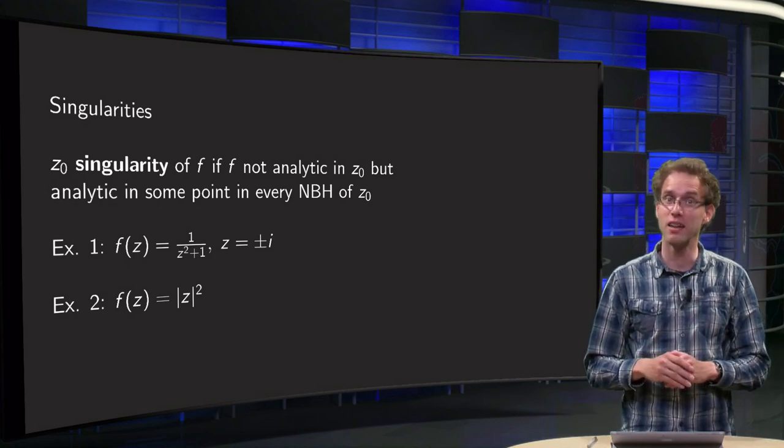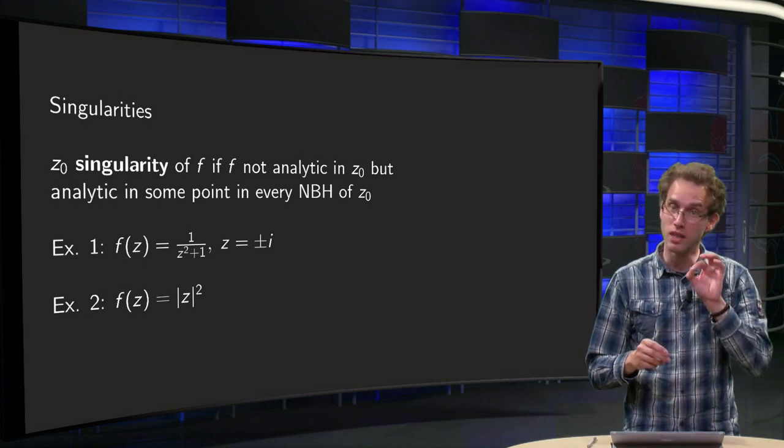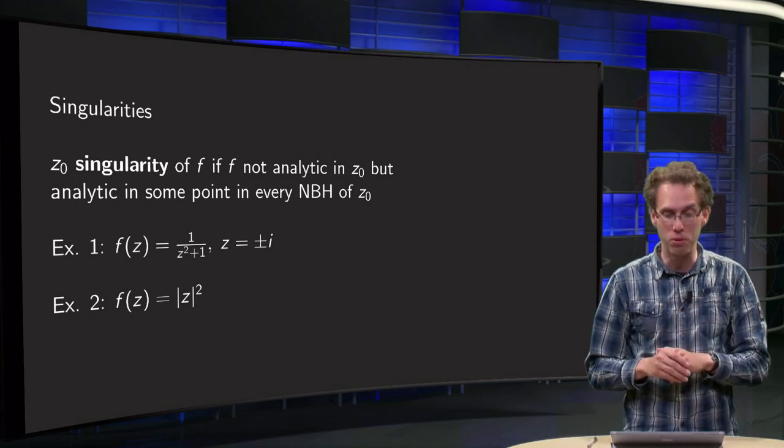The formal definition: z₀ is a singularity of f if f is not analytic in z₀, but analytic at some point in the neighborhood of z₀.